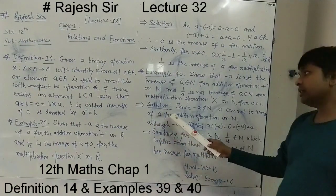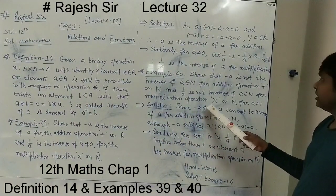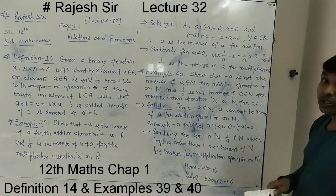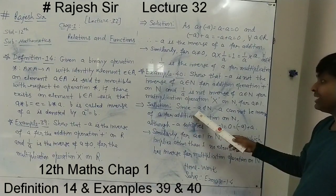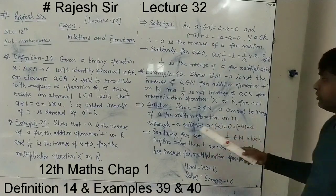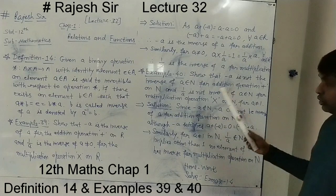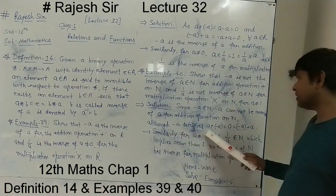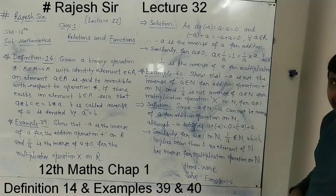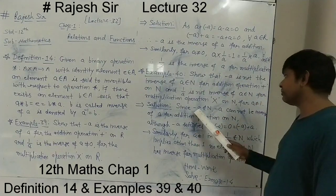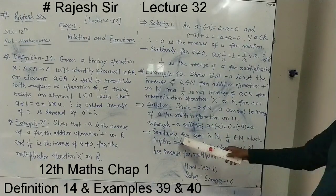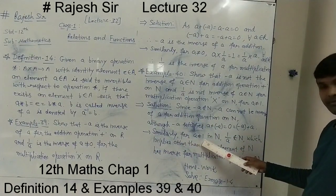In the solution: since minus A does not belong to ℕ when A belongs to ℕ — for example, if A is 2, then minus 2 does not belong to ℕ — minus A does not belong to ℕ. Although minus A satisfies A plus (minus A) equals 0 and (minus A) plus A equals 0, since minus A does not belong to the given set ℕ, we cannot take minus A in this set. Therefore it will not be the inverse of A.